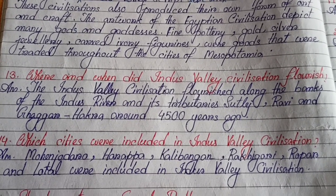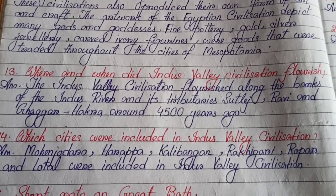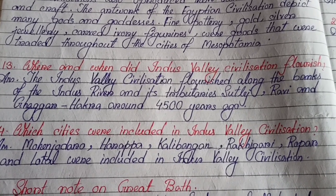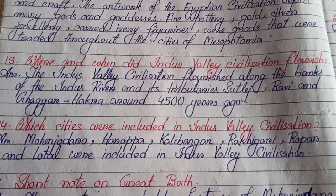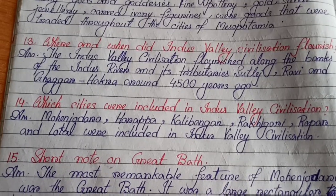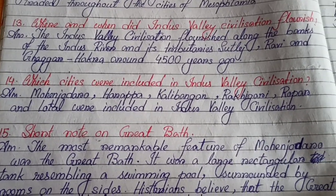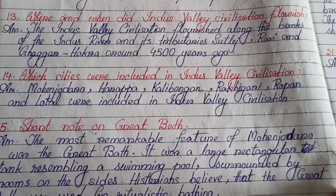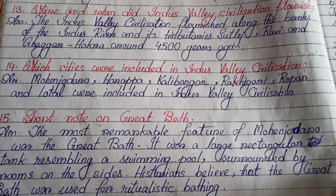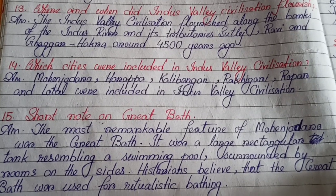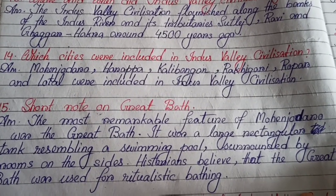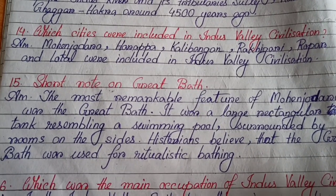The artwork of the Egyptian civilization depicts many gods and goddesses. Fine pottery, gold and silver jewelry, and carved ivory figurines were goods created throughout the cities of Mesopotamia. Number thirteen: Where and when did the Indus Valley Civilization flourish? It flourished along the banks of the Indus River and its tributaries — Sutlej, Ravi, and Ghaggar-Hakra — around 4500 years ago.